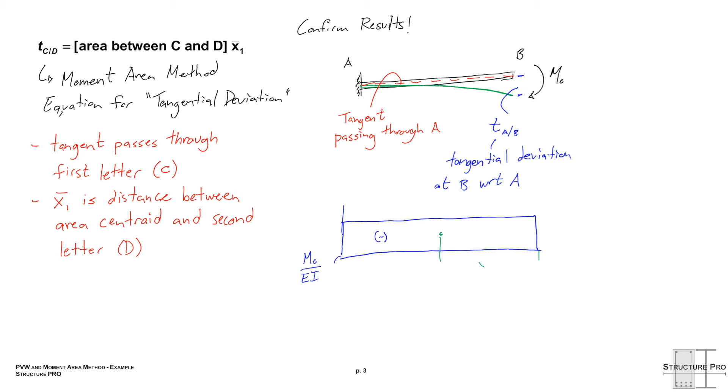Okay, so let's do that for our first case here, where we had mo, and remember it was constant, the whole length, so we're going to divide that by ei. Our area is mol over ei, and our centroid is right in the middle, so x1 bar is just l over 2. So tab, which is the tangential deviation at b with respect to a, for our case that was just delta bo, because we have this fixed support at the left side, making the tangent at a completely horizontal, and solving that, you can see I just plugged in that area times that distance, came out with l squared mo over 2 ei, and it's the same as principle of virtual work. Same value, so very good confirmation.